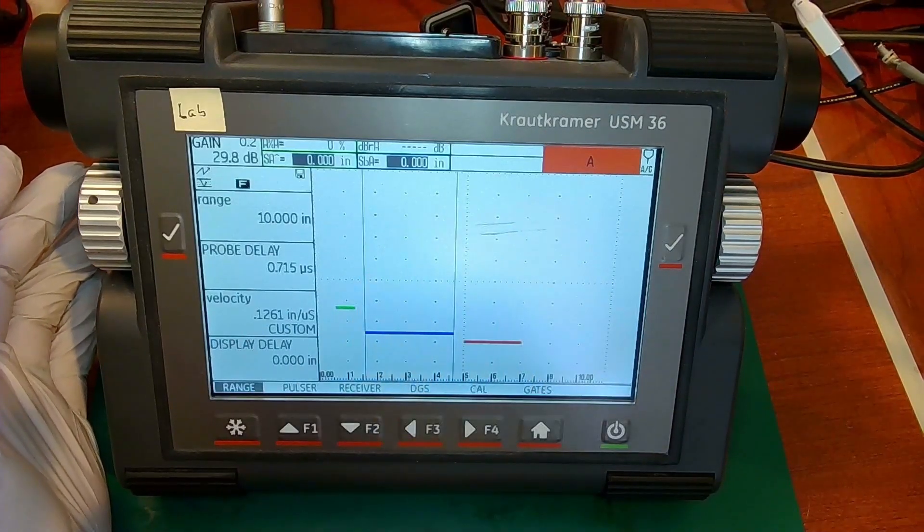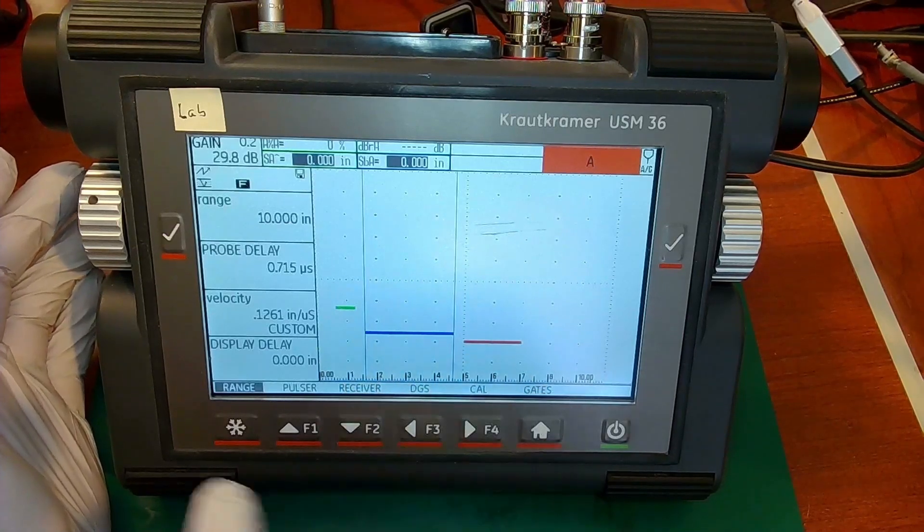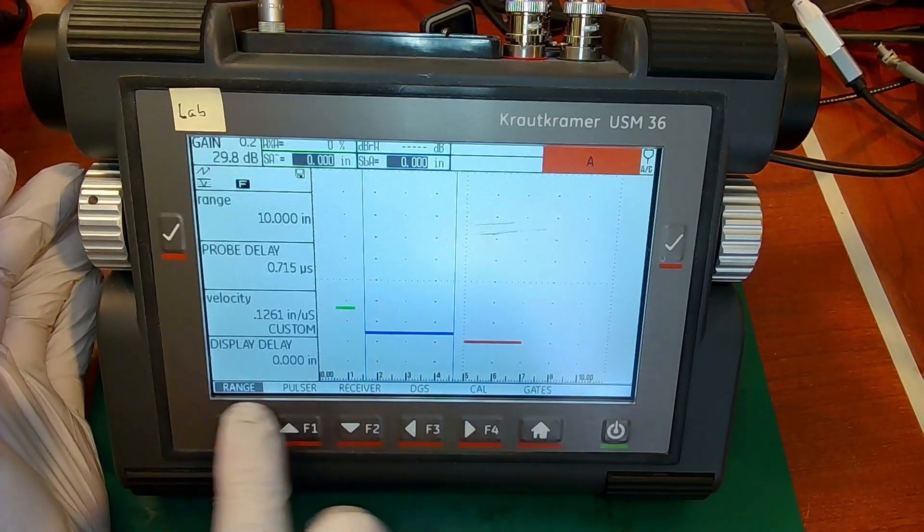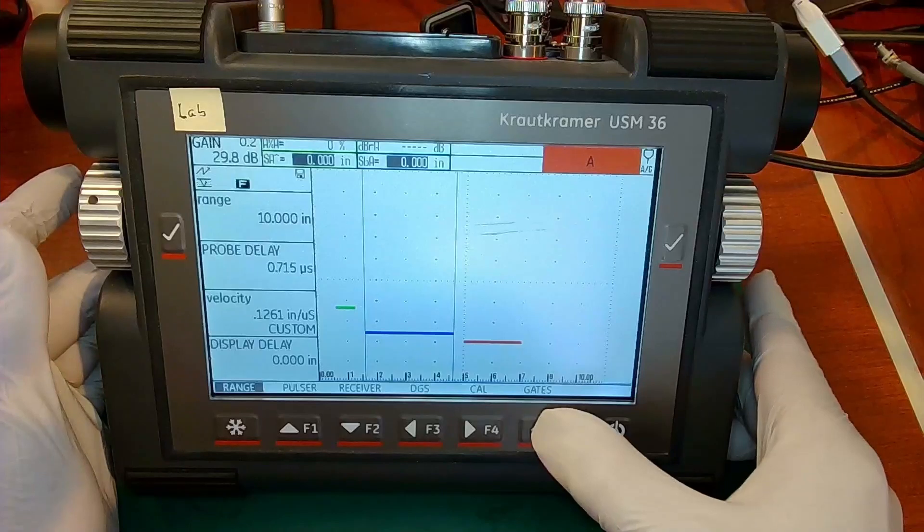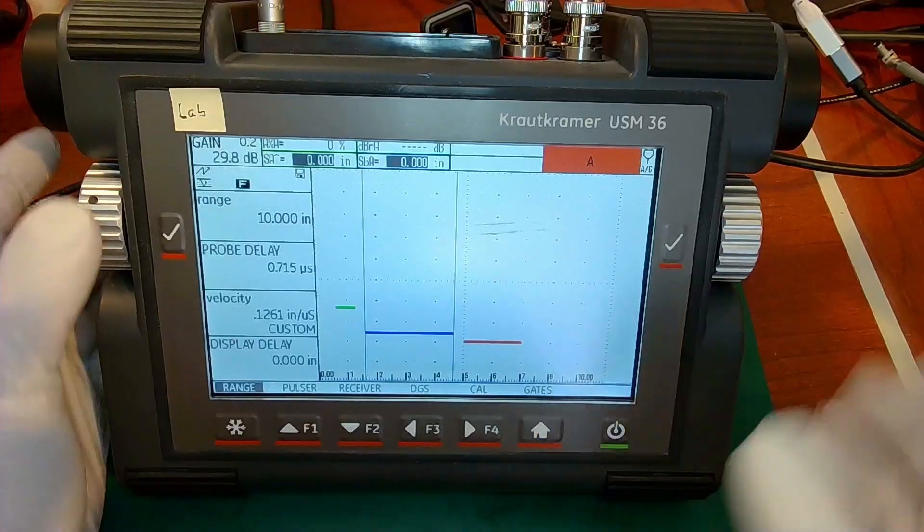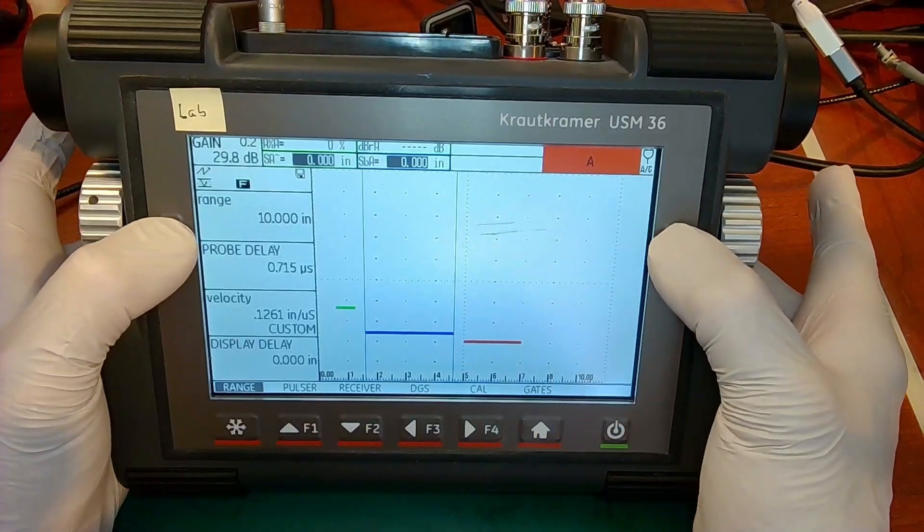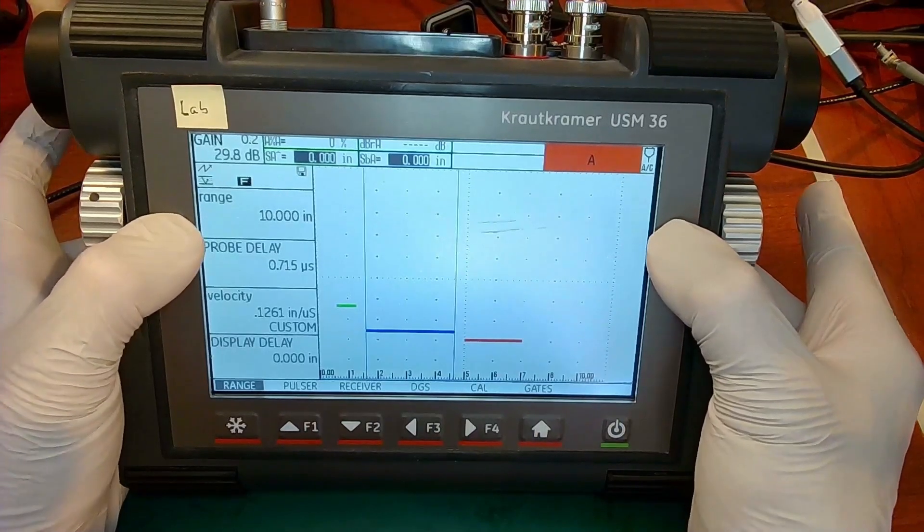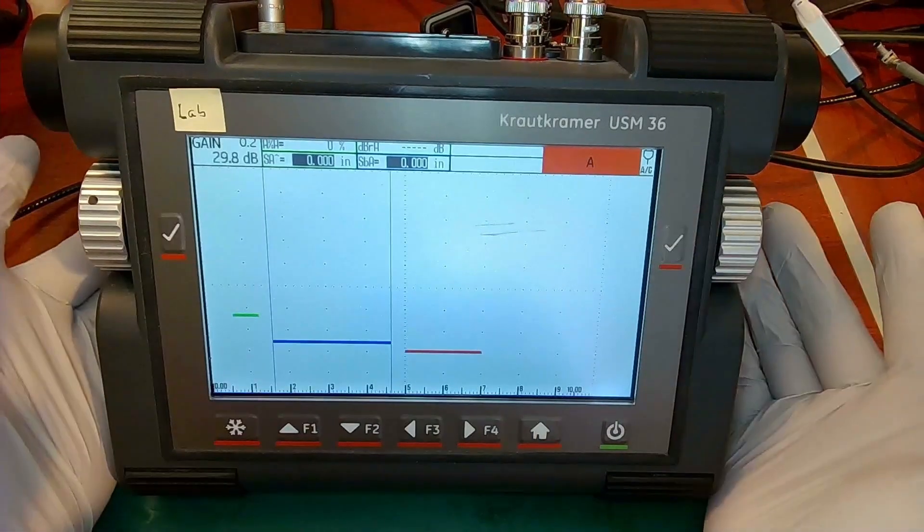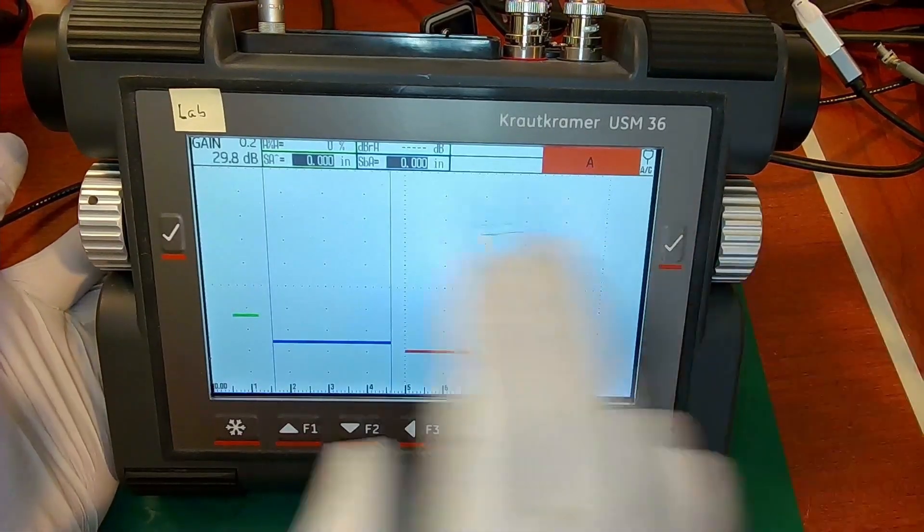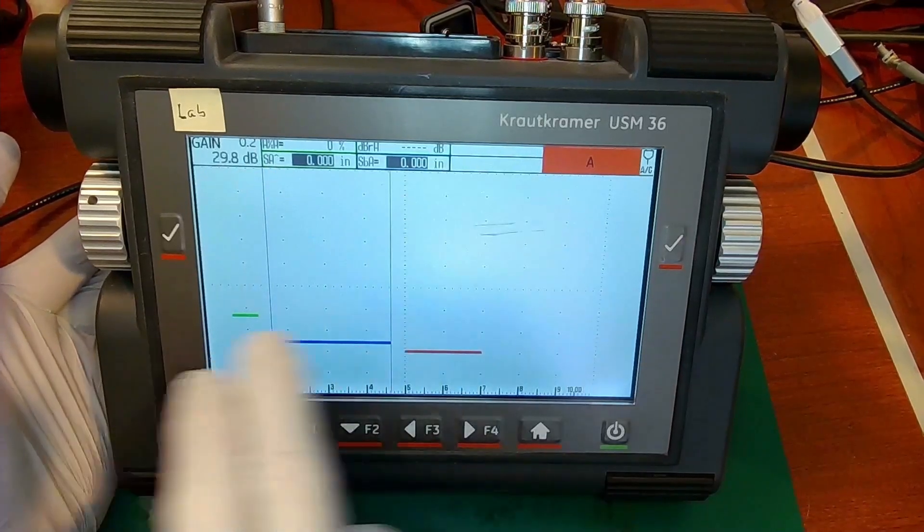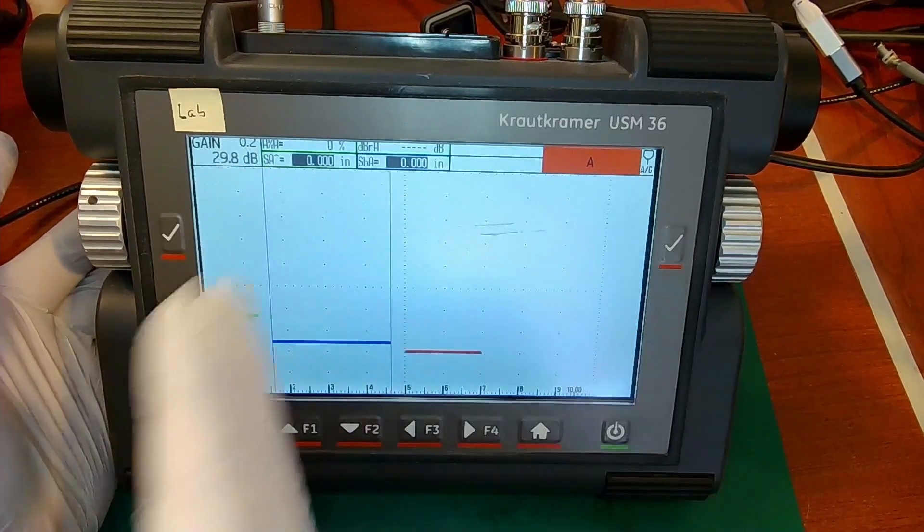Sometimes you'd like to see the A-scan large and full screen. Right now we're in the home mode. So we're down at our menu bar. If I hit both of the check marks at the same time, it will expand the A-scan to full screen. So I'll see my readings at the top and I will see the A-scan more or less full screen. The menus are hidden.